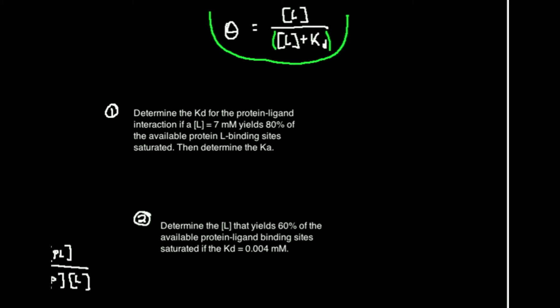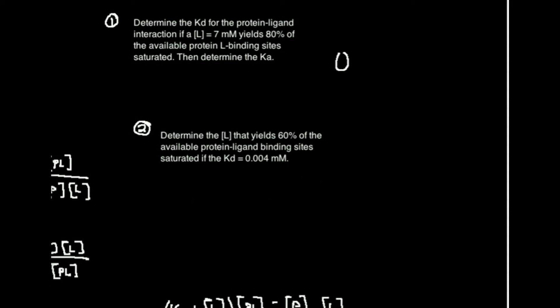Now what we're going to do is we know the Kd, we know theta, and we want to determine the ligand concentration. That's what we're going to do here. Let's go ahead and rewrite this formula. Theta is equal to the concentration of L divided by the concentration of L plus the dissociation constant. And I want to solve for L.